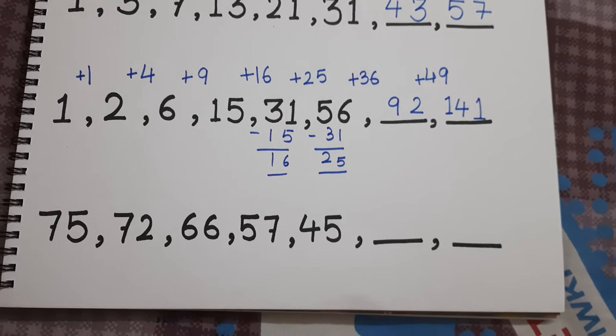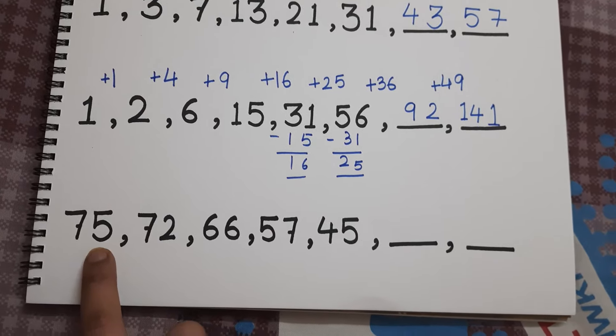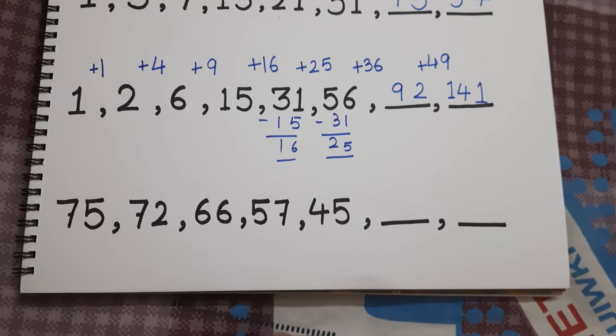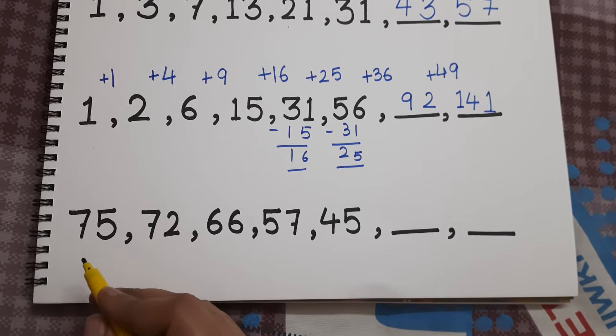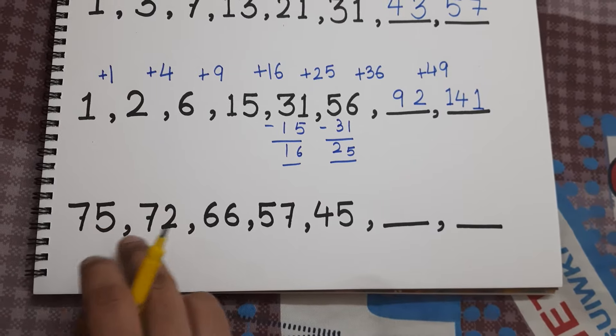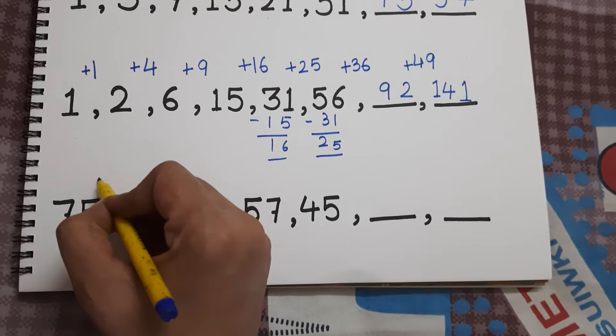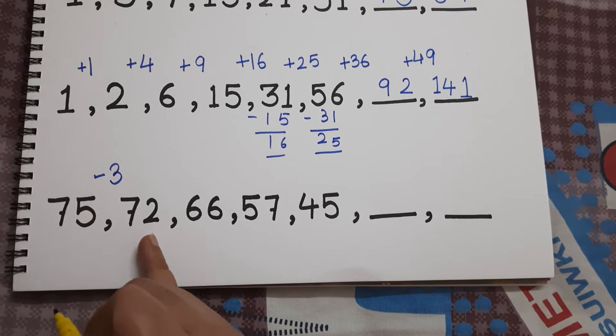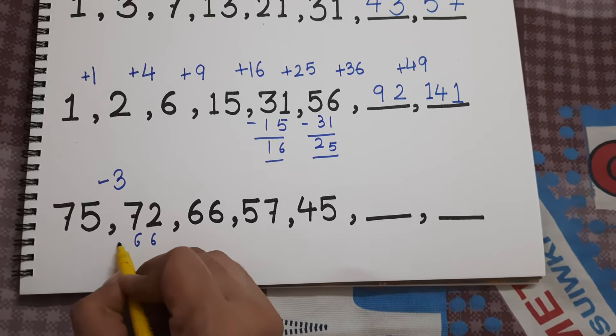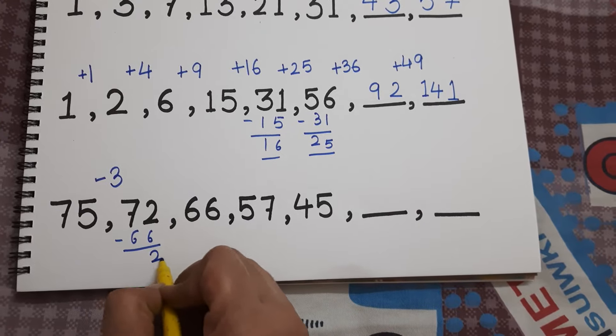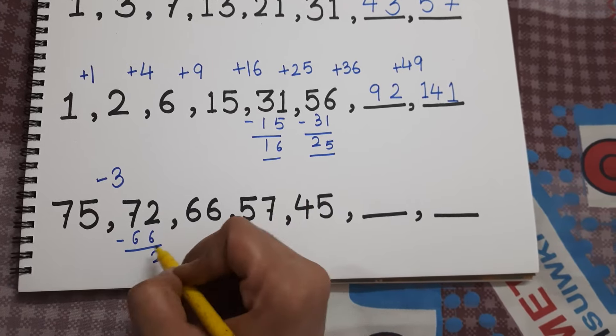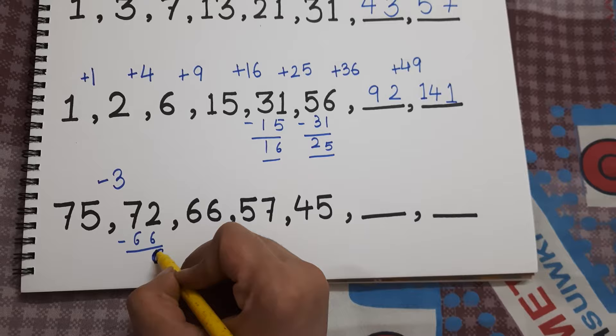Let's move on to our last series for the session. So it is - oh, the numbers are decreasing. There is subtraction taking place. So let us find the differences. 75 and 72, the difference - obviously tens digits are same, so I'll just have to subtract ones digits. So it is minus 3. Then 72 and 66, if you are not able to do it orally, write down the smaller number just below the bigger number and subtract. So it is 12 minus 6 is 6, so minus 6.